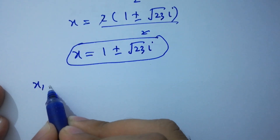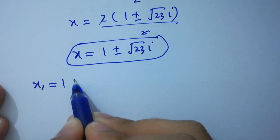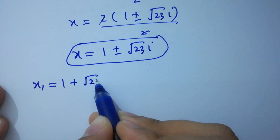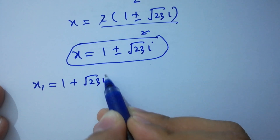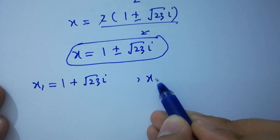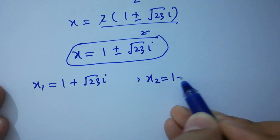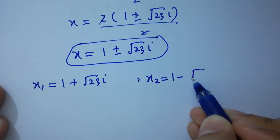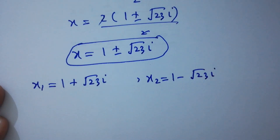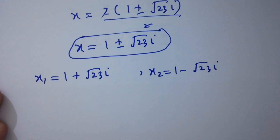So we have x1 equal to 1 plus square root of 23i and x2 equal to 1 minus square root of 23i.